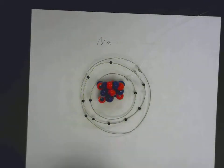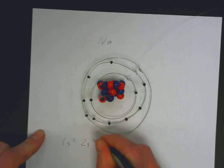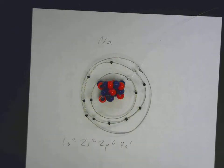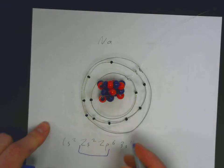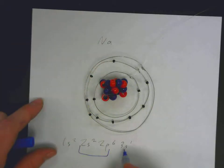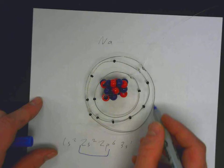For instance, for sodium its electron configuration is 1s2, 2s2, 2p6, 3s1. So we are combining the 2s and the 2p onto the second principal energy level, the second ring. The third principal energy level has one electron here.